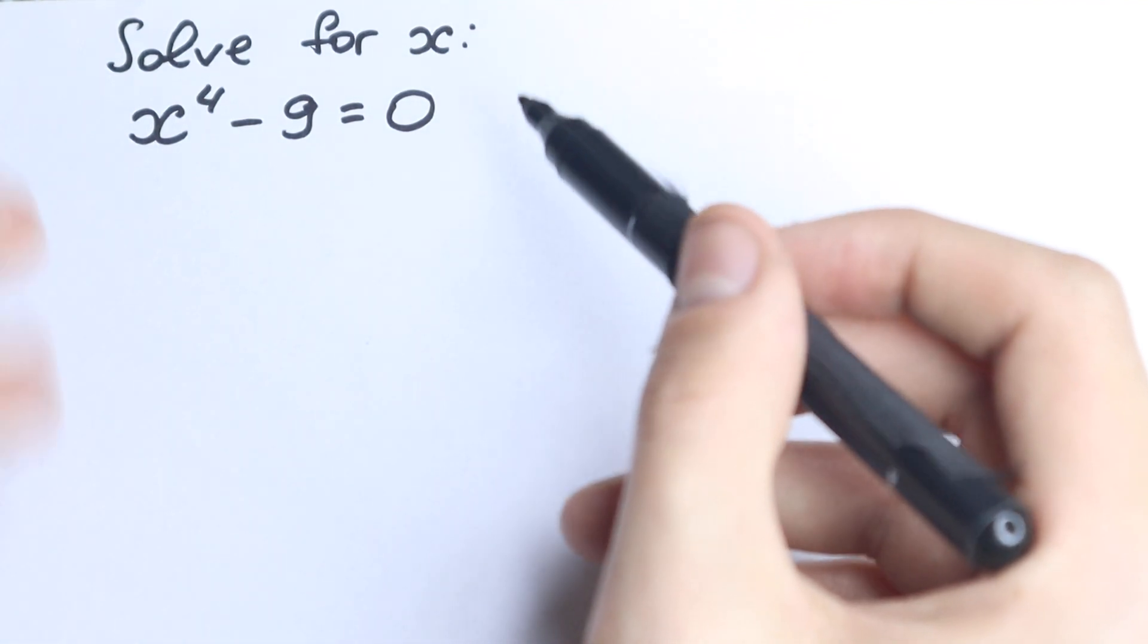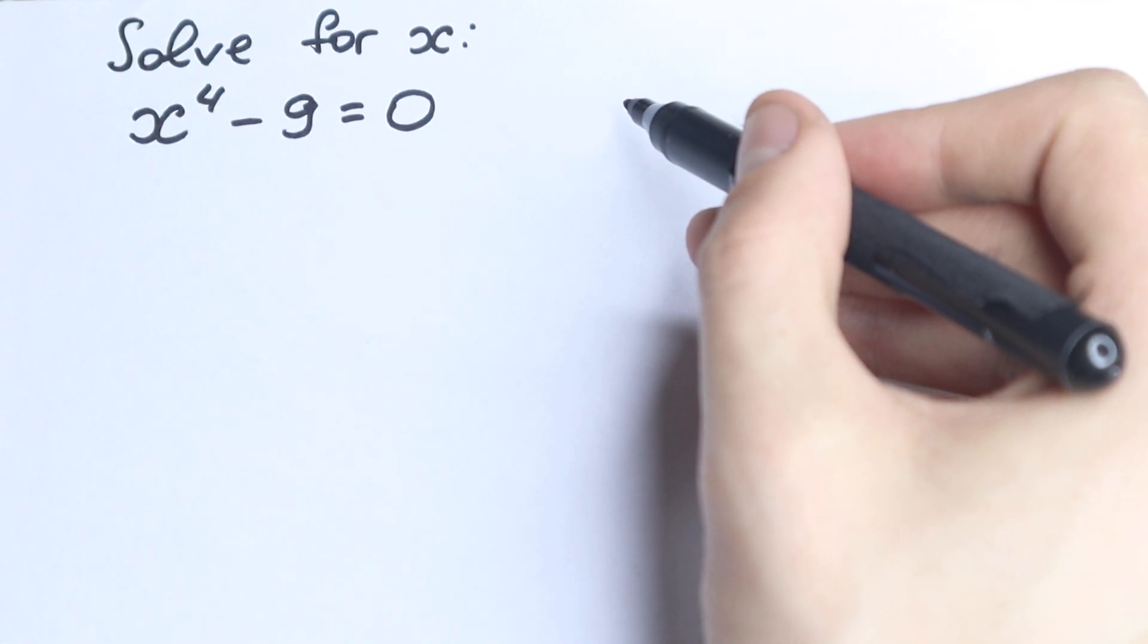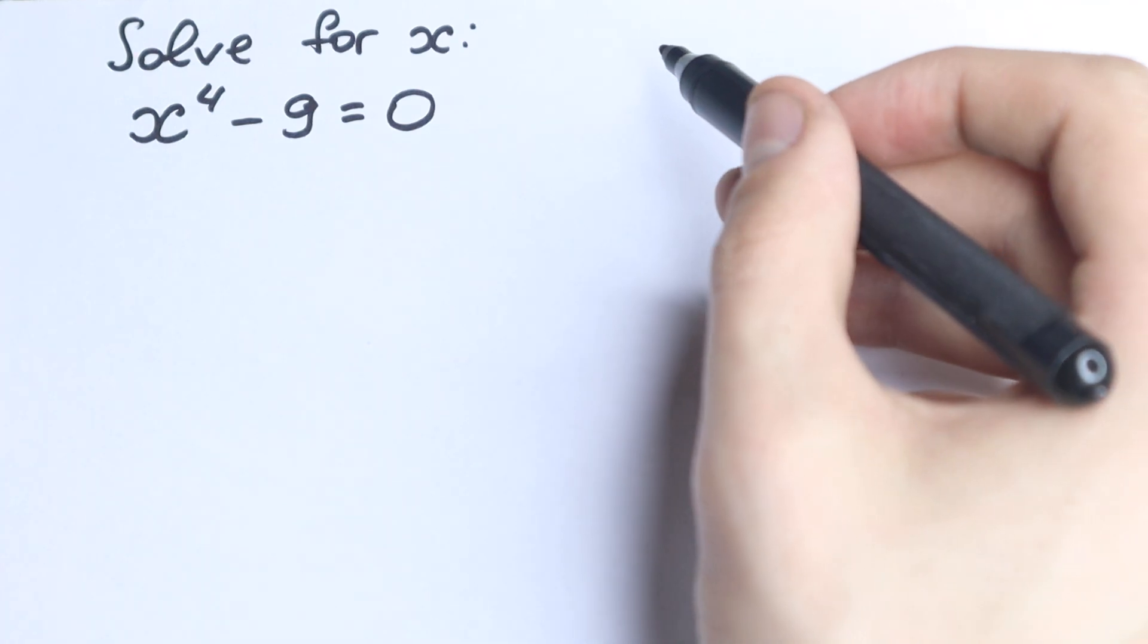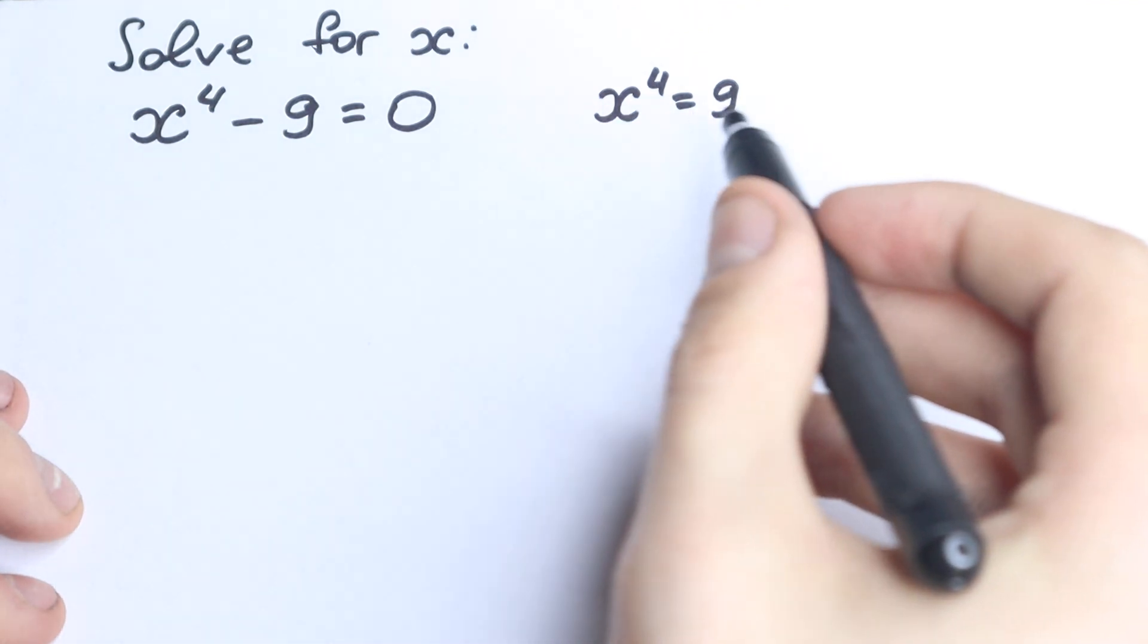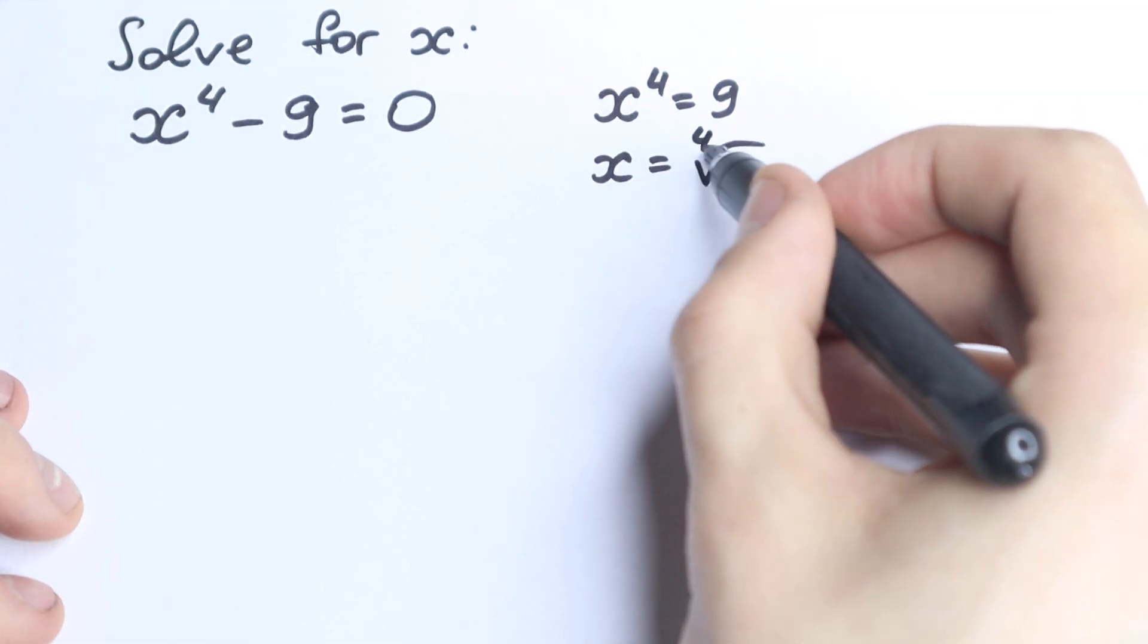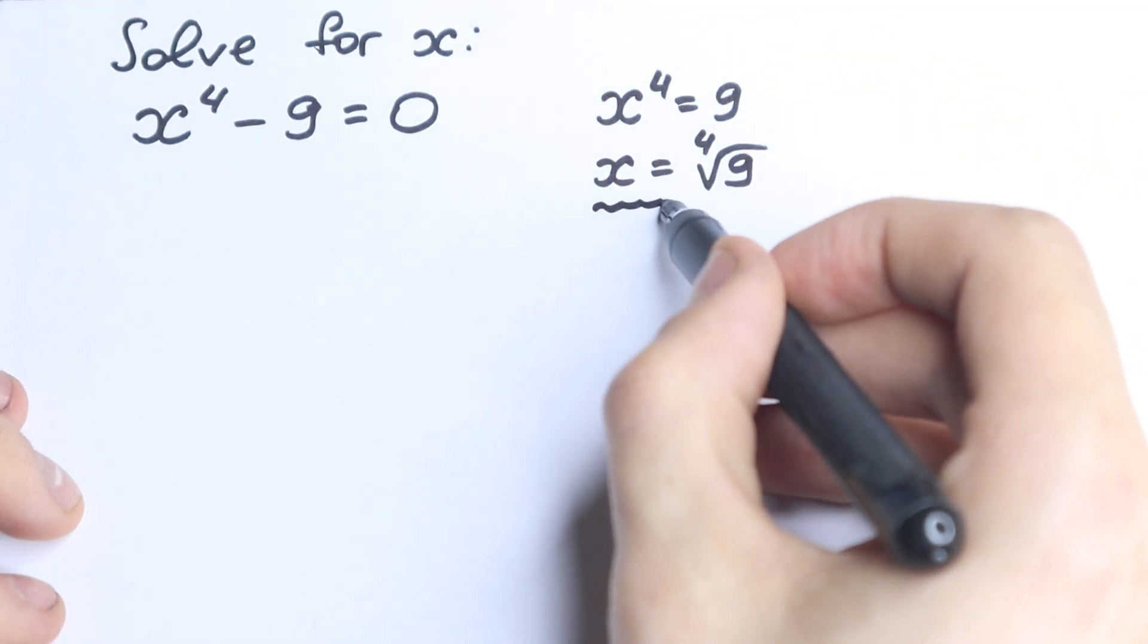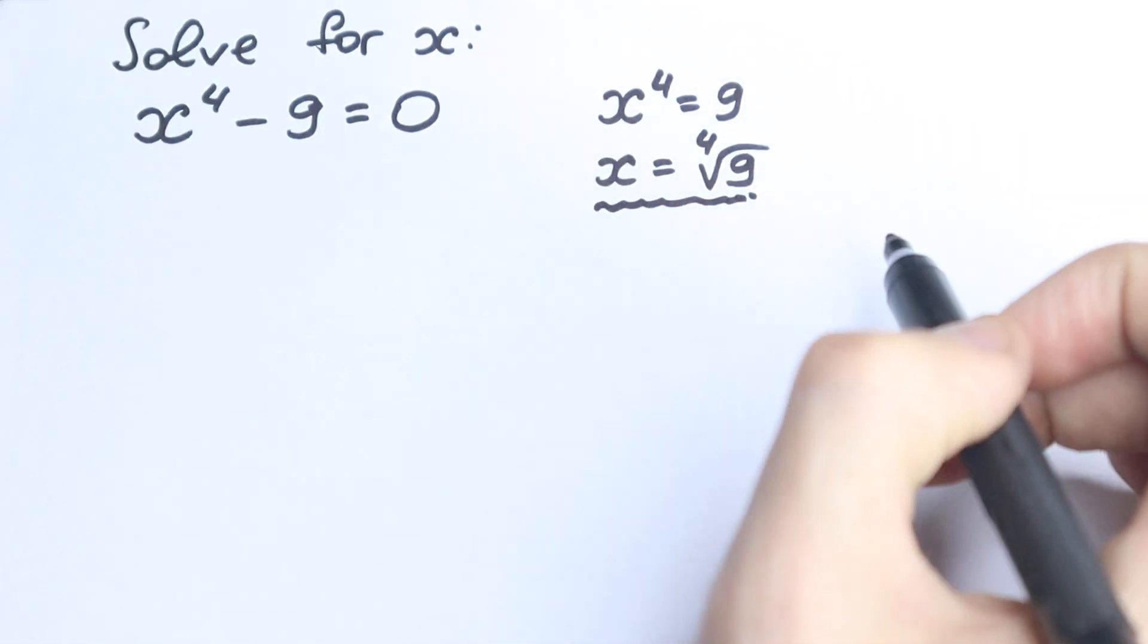There are two types of students. One type solves this question like that. They say, okay, from school we learned we need to regroup our variables on the left hand side, our constant on the right hand side. So we have x to the fourth equal to nine, and we have x equal to fourth root of nine, something like that. They solve this question like that, maybe they put plus minus. They don't simplify this; this is the final answer for them.